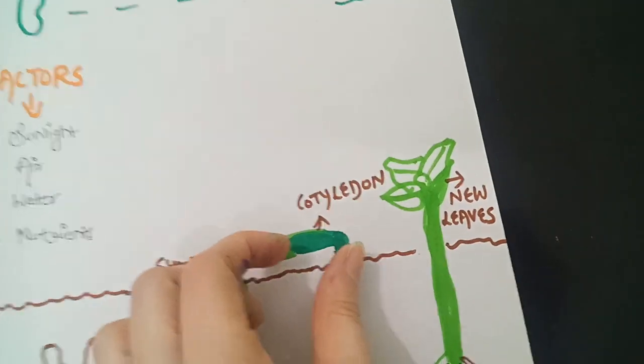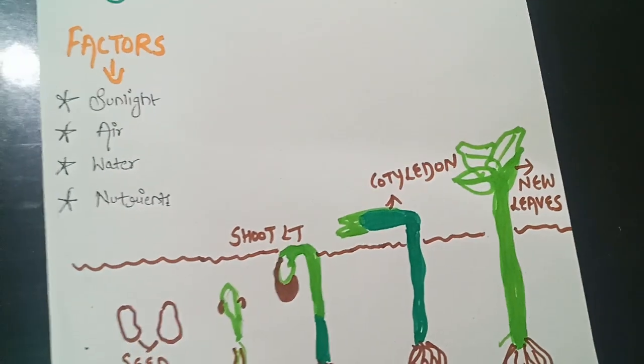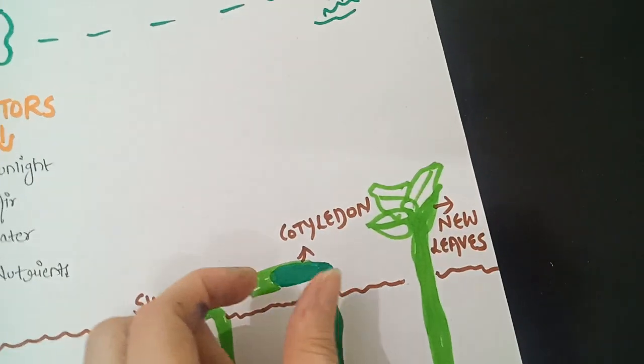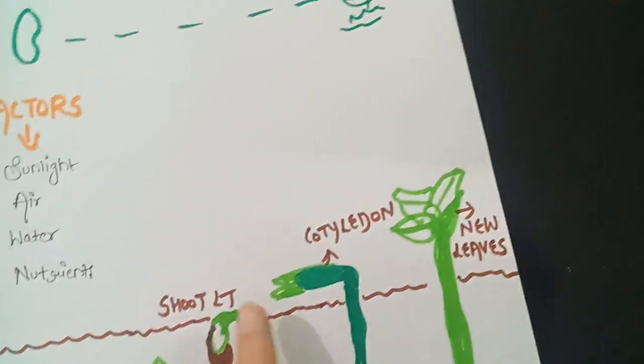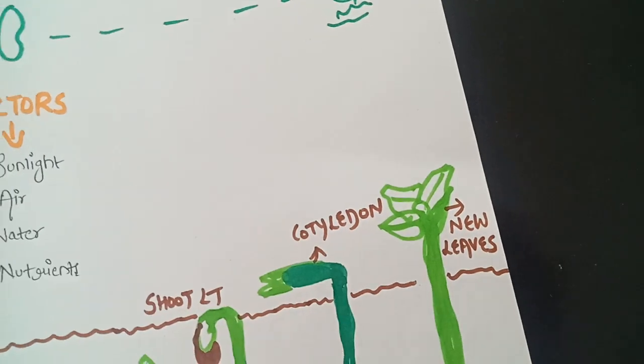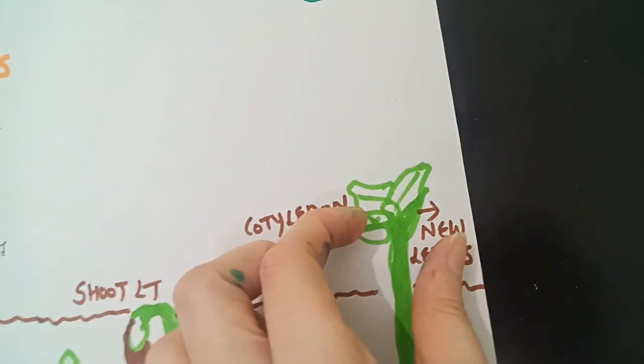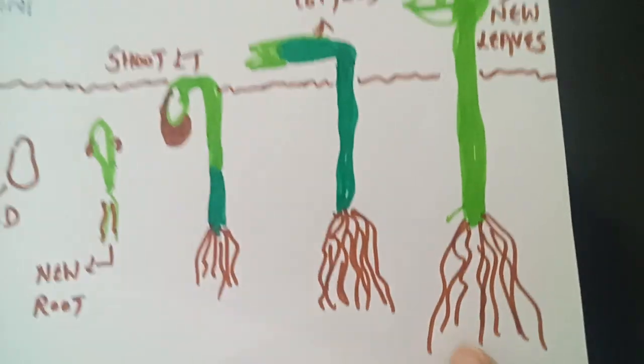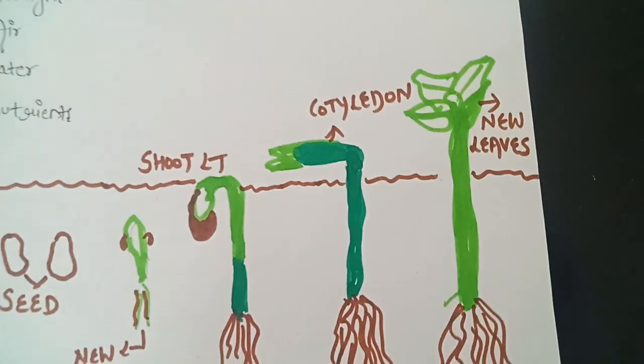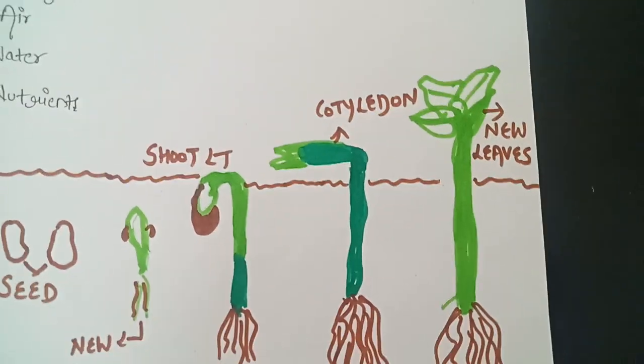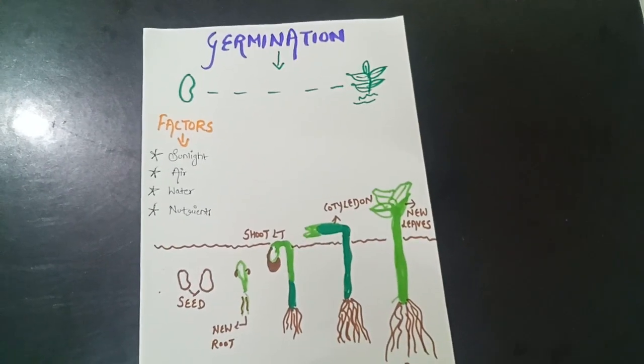And cotyledons. Cotyledons provide food to the growing plant. Leaves appear at the shoot side. And finally here you can see leaves. New leaves are coming from this plant and roots are developing more and more. So finally the young plant is now called a seedling. So this is your process of germination.